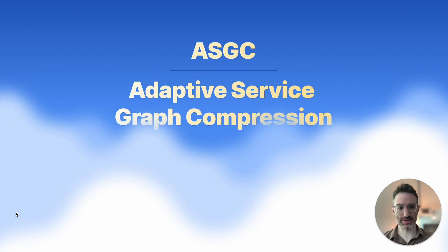I want to introduce a super cool idea that's used by Unison Cloud to greatly reduce service call overhead. It's something we call adaptive service graph compression. I'll explain what that means in a minute.